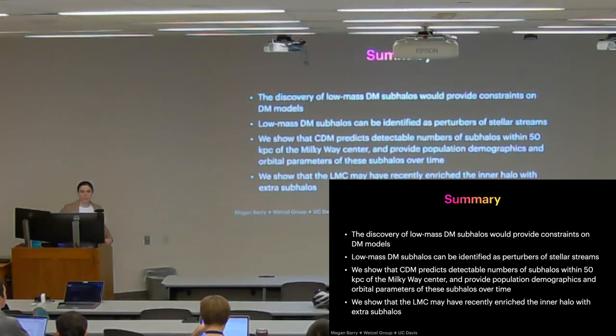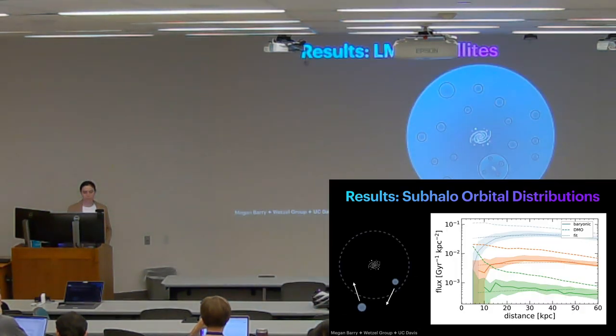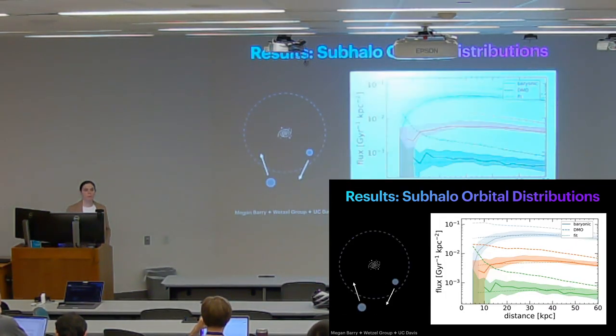I was wondering about characterizing this as a flat flux through a surface. So does the angle that a subhalo intersects that shell or intersects a stream matter? So do we need to think about these fluxes as functions of angle through the surface as well?